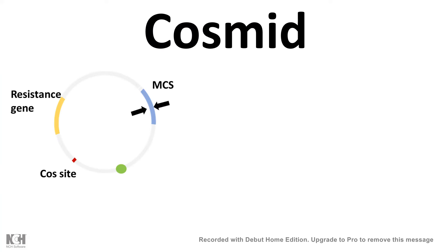In this installment we will talk about cosmids, which are modified plasmids and their cloning vectors. They are better than plasmids, and in this video we will understand how. If we break down the name: cosmid equals cos plus plasmid. The 'cos' came from the cos sites in the lambda phage vector, and the plasmid is just the normal plasmid — the cloning vector.